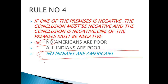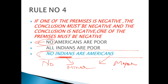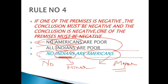हमने क्या बोला था: अगर 'no' आएगा, तो उसके साथ वाली दोनों terms — Indian भी और America भी, that is minor भी और major भी — दोनों के दोनों distribute होनी चाहिए। तो Indian — yes, यहाँ पर आया हुआ है। America — yes, यहाँ पर distribute हुआ हुआ है। तो देखते हैं हमारा कौन सा case बनता है।